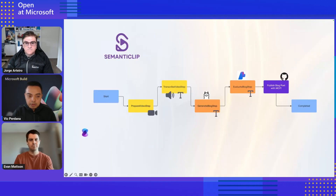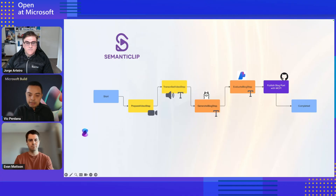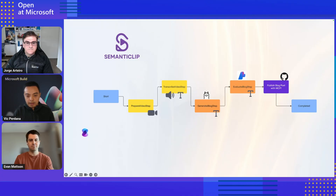So here's an example of how an agent can be built. I call it Semantic Clip — an agentic system that takes a video and converts it into a blog post. As a bonus, you can see the ability to publish that blog post with MCP, the model context protocol, which is what's hot at the moment. And as you can see, it's quite deterministic in the sense that you give the agent some freedom but at the same time guardrail the process — it carries context from preparing the video, transcribing it into text, generating the blog, doing evaluation, and so on.